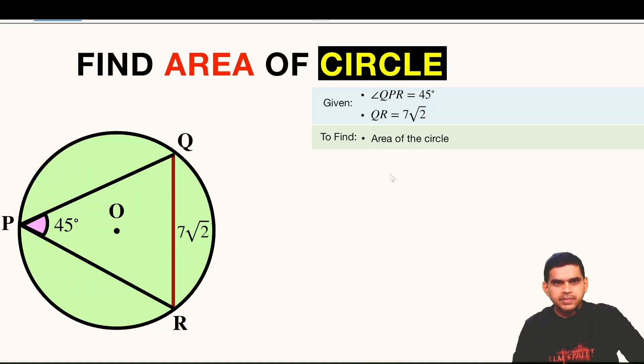So let us begin the solution. First of all we know that area of any circle is equal to pi times the square of its radius. So our endeavor must be to find out the radius of this circle.